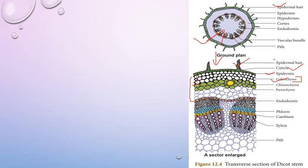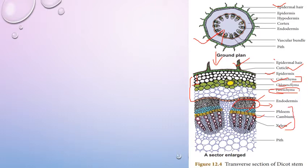Certain cells of this cortex contain chloroplasts — that is chlorenchyma — and they help in photosynthesis. The lowermost layer of the cortex is parenchymatous in nature, consisting of large-sized thin-walled cells with large intercellular spaces. The innermost layer of the cortex is the endodermis, followed by a sclerenchymatous patch which is the pericycle, then phloem, cambium, and xylem — forming a complete vascular bundle. The central portion is occupied by large parenchymatous cells forming the pith.